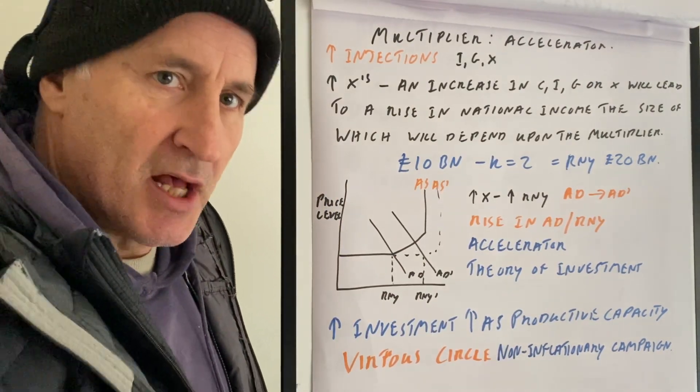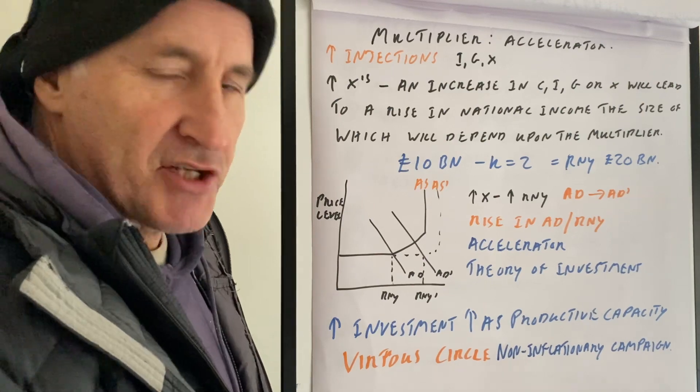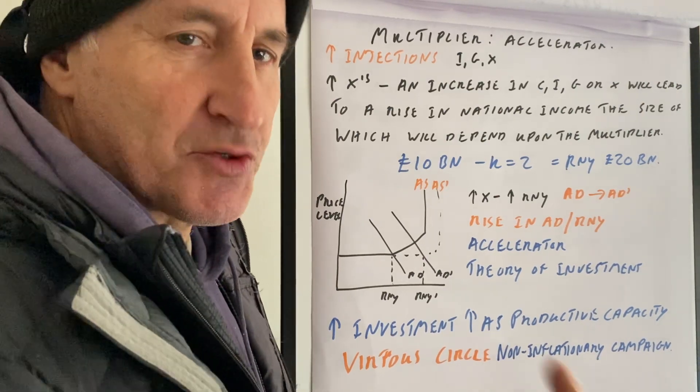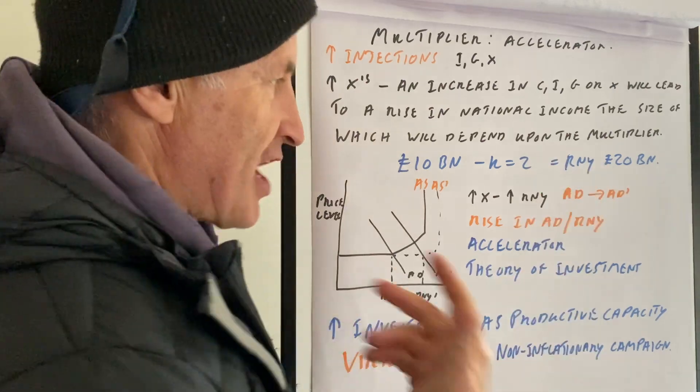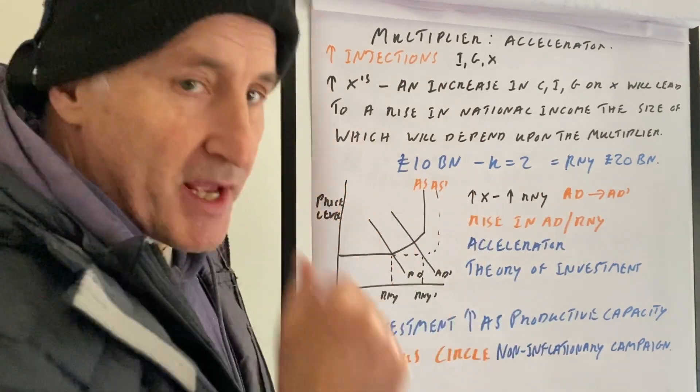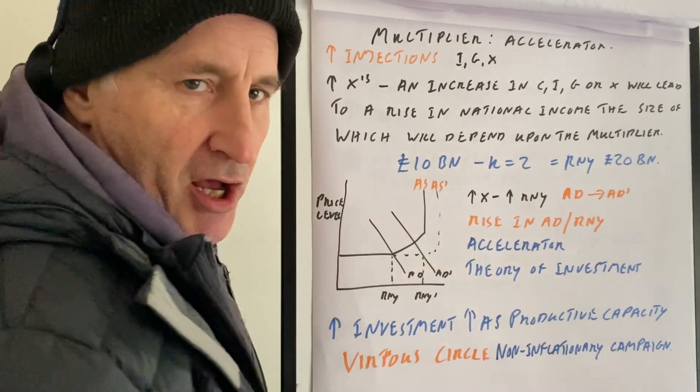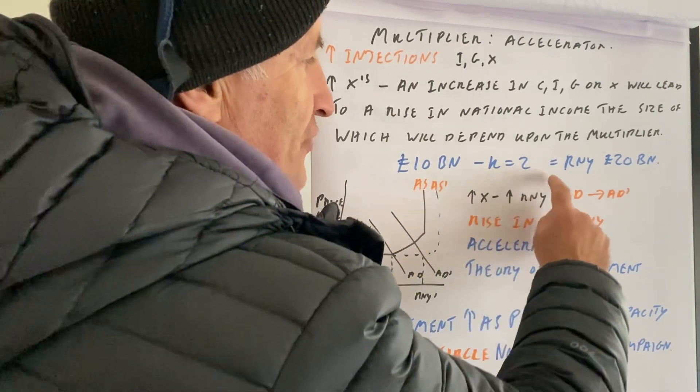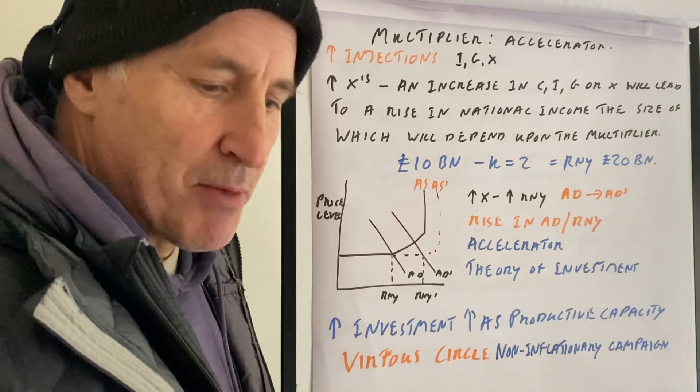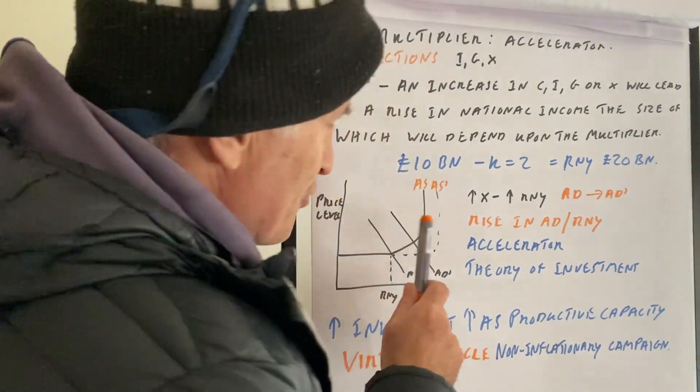An increase in C, I, G, or X will lead to a rise in national income, the size of which will depend upon the multiplier. Now, just say if you put 10 billion pounds into the economy and the multiplier is equal to two—we roughly think that the multiplier in the UK is equal to about two—then that will lead to a rise in national income of 20 billion quid.